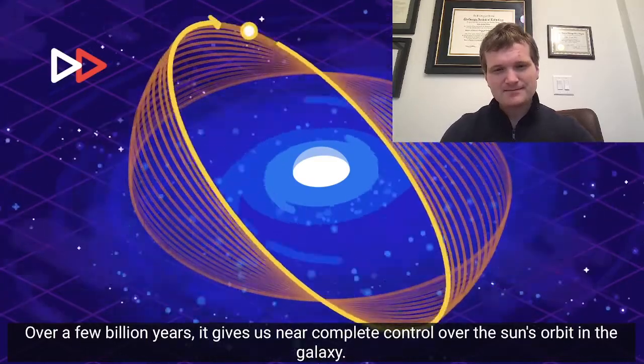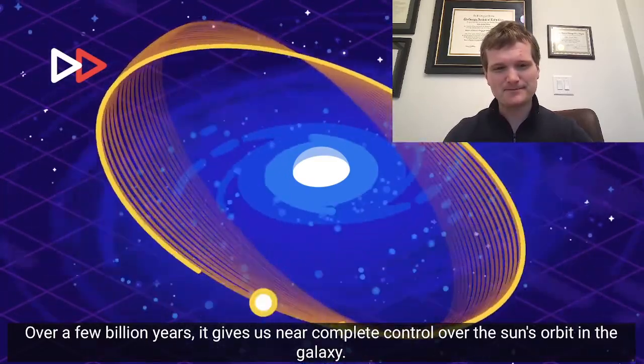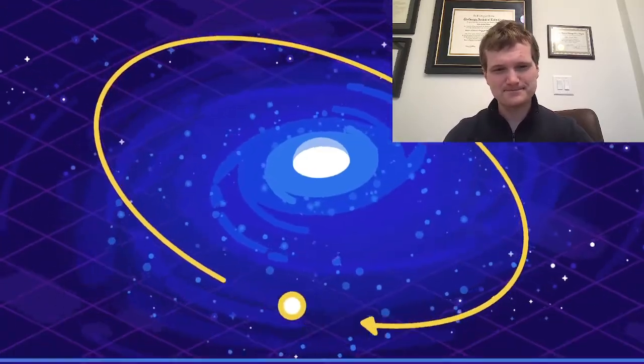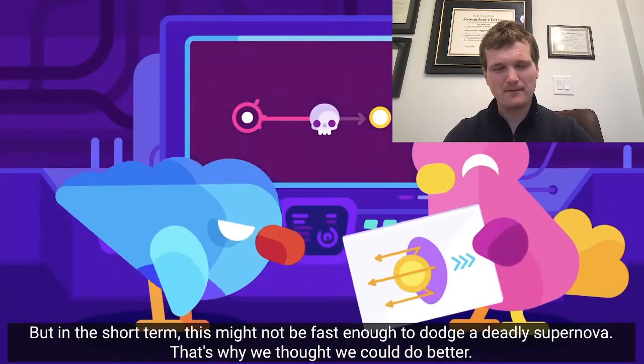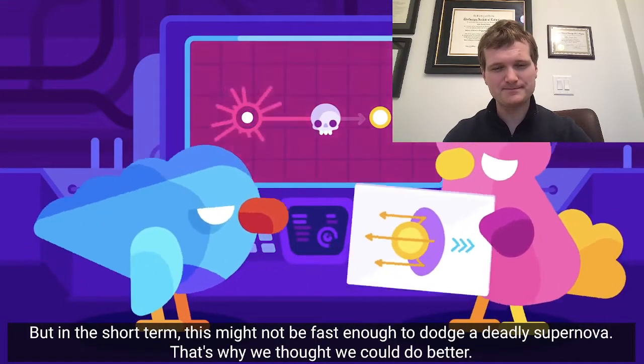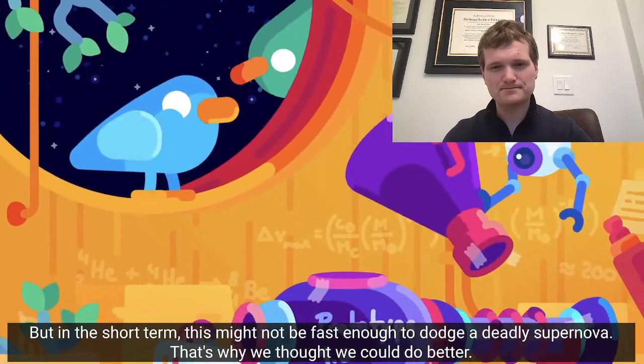Over a few billion years, it gives us near complete control over the sun's orbit in the galaxy. But in the short term, this might not be fast enough to dodge a deadly supernova. That's why we thought we could do better.